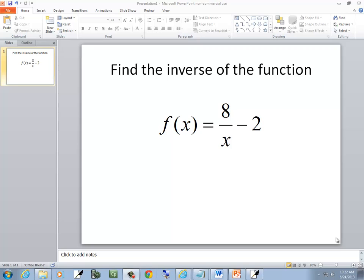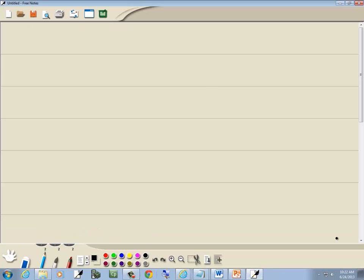Let's find the inverse of this function. We've got f of x is equal to 8 over x minus 2. Now step 1, replace f of x with y. So this becomes y is equal to 8 over x minus 2.